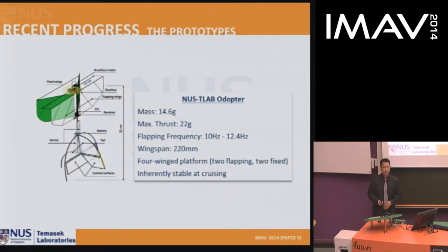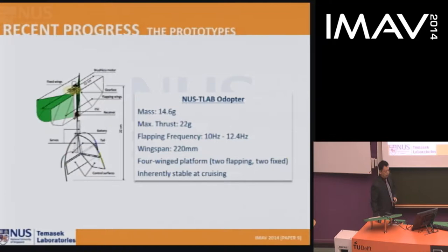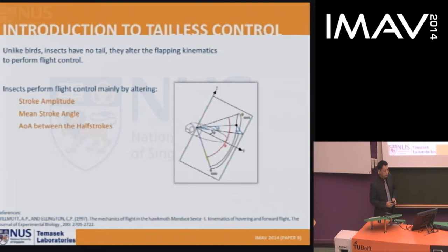The NUST lab adopter platform, already seen in Dr. Nguyen's presentation on the first day, has two fixed wings and two flapping wings. All controls are done via conventional control surfaces. This platform is inherently stable at cruising but not at hovering. They also have another platform that is inherently stable at hovering, but its design is not yet published.